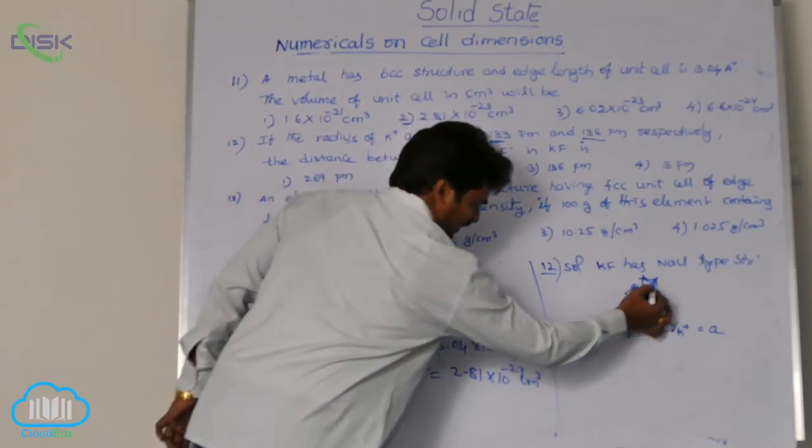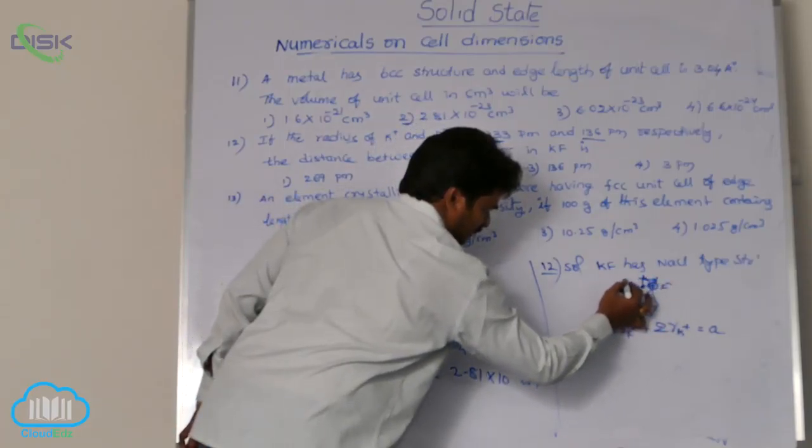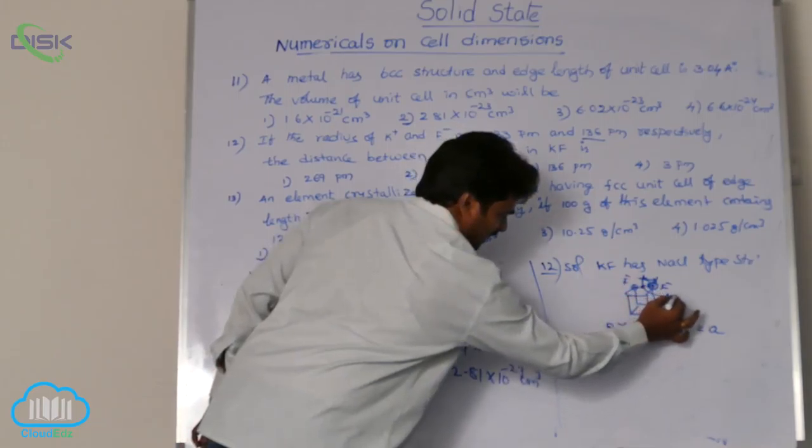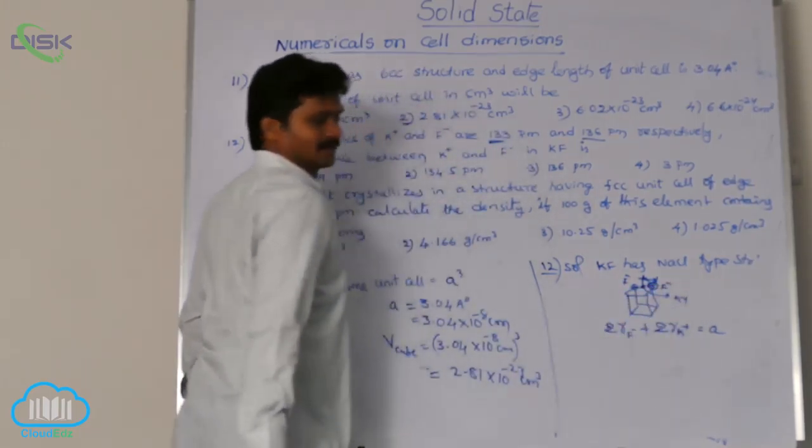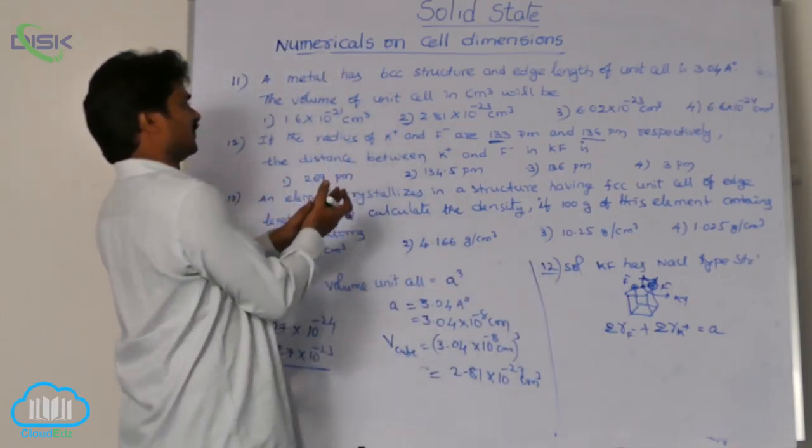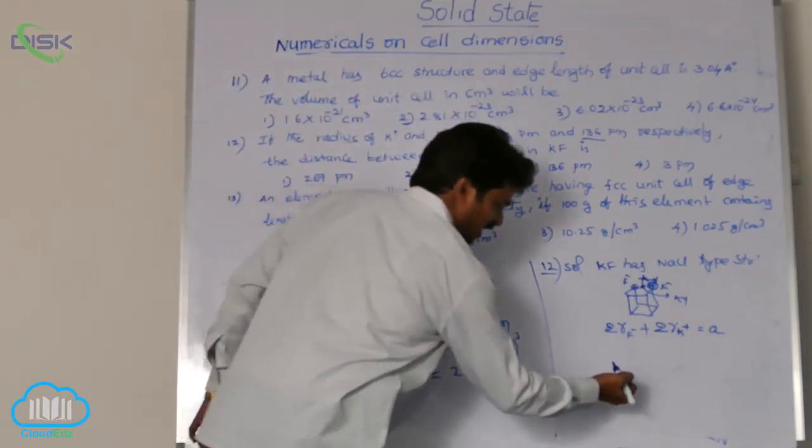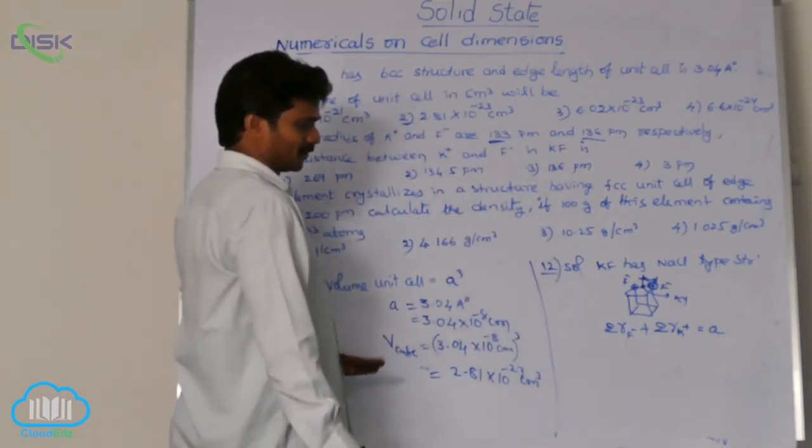So, this is half the distance A. It is fluoride ion. This is fluoride ion. This one and this one fluoride ion inside potassium ion. Potassium ion. Now, asking for the distance between K plus and F minus, nearest distance, means A by 2. How to get A by 2?